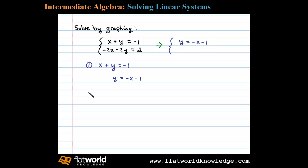Let's look at the second equation. The second equation is negative 2x minus 2y equals 2. Let's begin by adding 2x to both sides. That'll leave us with negative 2y equals 2x plus 2. Next, dividing both sides by negative 2 leaves us with slope-intercept form: y equals negative x minus 1. Now notice both equations in slope-intercept form are the same.